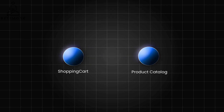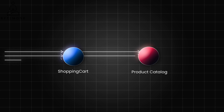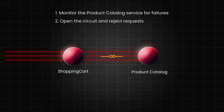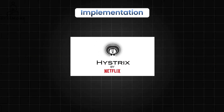For example, consider the shopping cart microservice that depends on a product catalog microservice to fetch product information. If the product catalog service goes down, the shopping cart service could be bombarded with requests, potentially leading to its own failure. By implementing a circuit breaker, the shopping cart service can monitor the product catalog service for failures. If the failure rate exceeds the threshold, it opens the circuit and rejects requests to the product catalog, displaying a message that product information is temporarily unavailable. After a timeout, it can attempt to reconnect to the product catalog service.